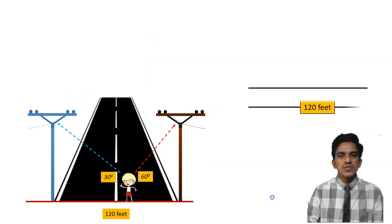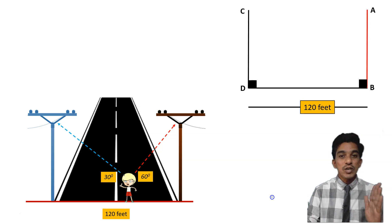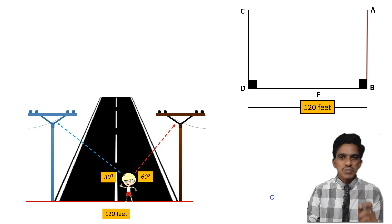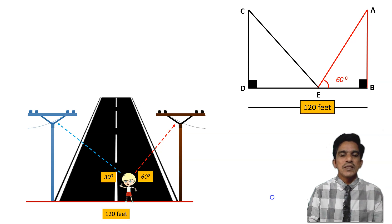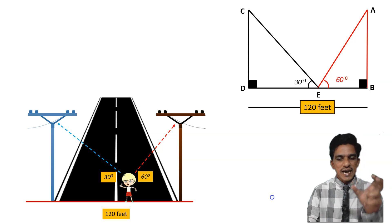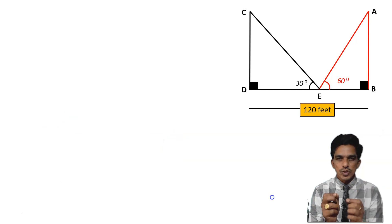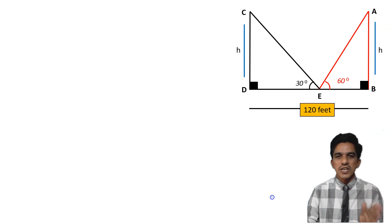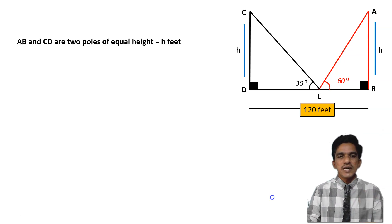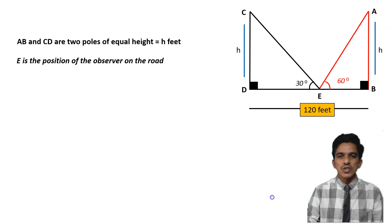Let us try to draw the diagram for this. This is the road, which is 120 feet wide. A, B and C, D are the two poles of equal height. Now suppose E is the observer, and the angle of elevation of the first pole is 60 degrees and the angle of elevation of the second pole is 30 degrees. You have to find the height of each pole and also the position of the observer on the road. Let us take height of each pole as H.